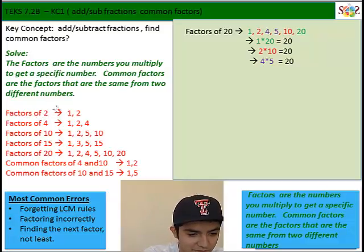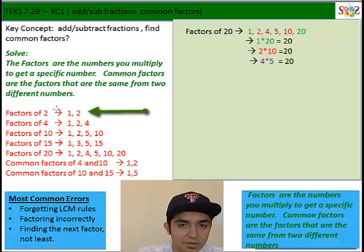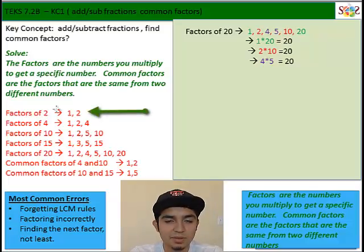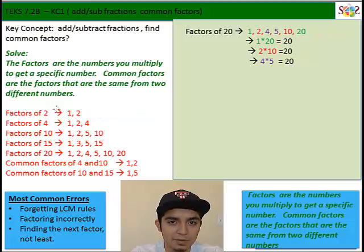Here we have the factors of 2 are 1 and 2, since you can multiply 1 times 2 to get 2, but no other whole numbers multiply to get 2.